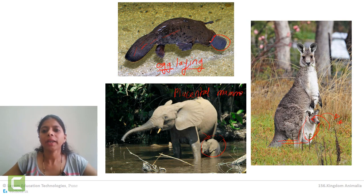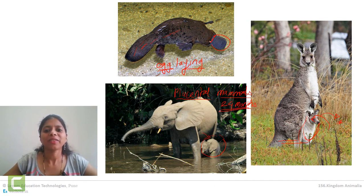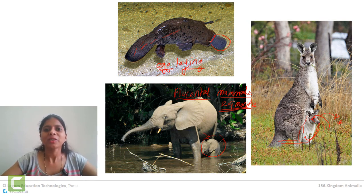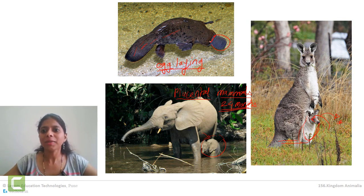The pregnancy period of elephant is considered the highest — it is 24 months, which is 2 years. The baby birth in elephants takes around 24 months. So these are the three different types of mammals: egg-laying mammals, marsupial mammals, and placental mammals.